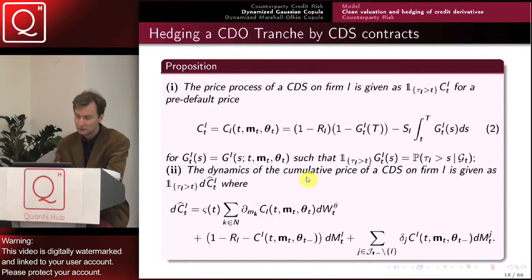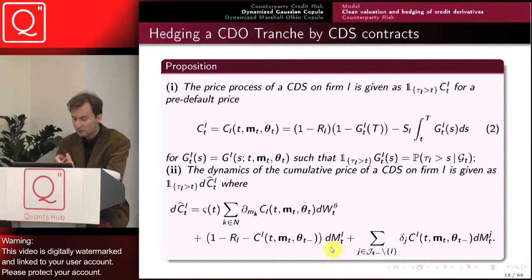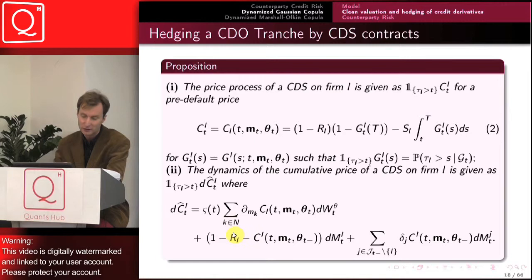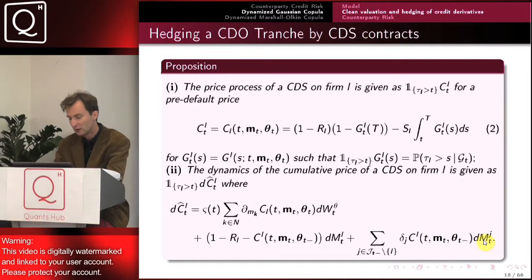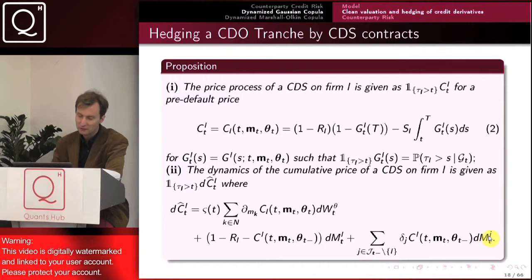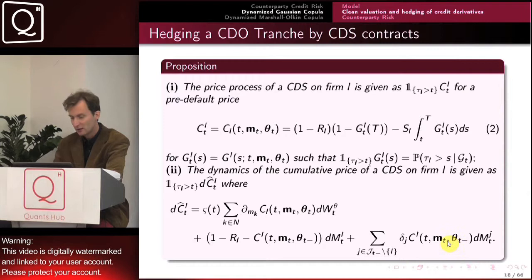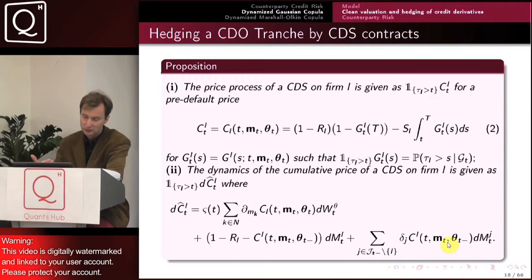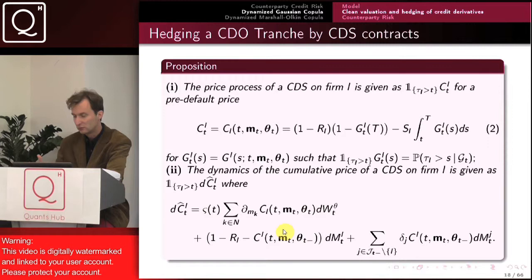The coefficients of the compensated jump-to-default terms: if it is a default of name L, it has to be the cumulative value after default of name L, which is simply 1 minus recovery, minus the so-called pre-default value — the price right before tau. If we are pricing name L but looking at the martingale component in the direction of the compensated default of name j different from L, the coefficient is the jump of C_L in response to a default of name j, which is the delta_j operator of C_L valued at that point. The Markov structure is used to establish this formula, which is important to know which Greeks you need to compute in order to hedge.